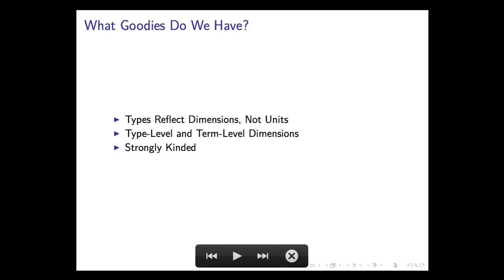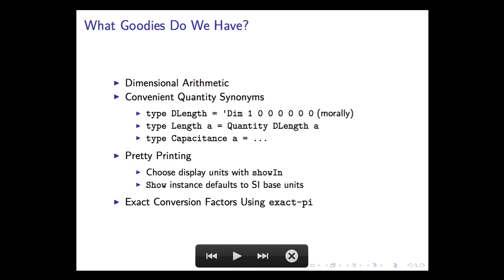So why pick this one? We do have some good things. The types reflect the dimensions of your quantities, not their units. So you don't have different types to represent lengths in meters and lengths in feet. You just have one type to represent lengths, which is convenient. We have good type-level representations for dimensions, and we also have a good term-level representation for dimensions that we use to have relaxed static typing when you don't want it and just have a quantity of any type, which can be really useful for taking user input. And we have dimensional arithmetic, so we have dimensionally checked flavors of all the arithmetic operators from the prelude that make sure that you can't take the sine of three feet because what's that and so forth.